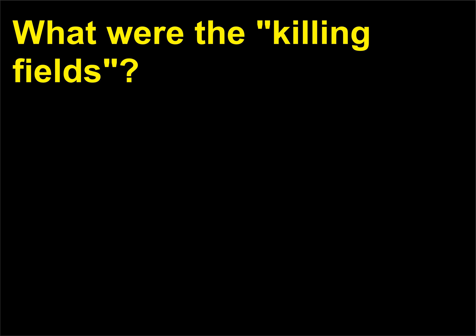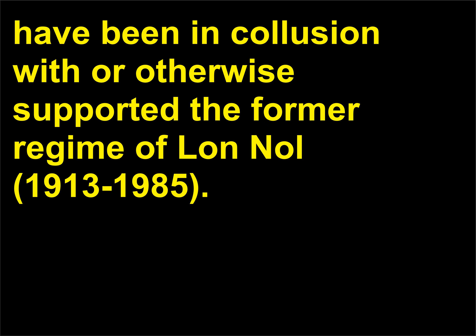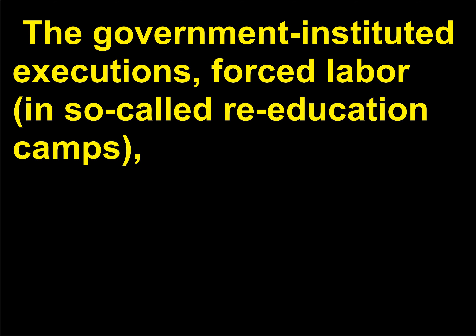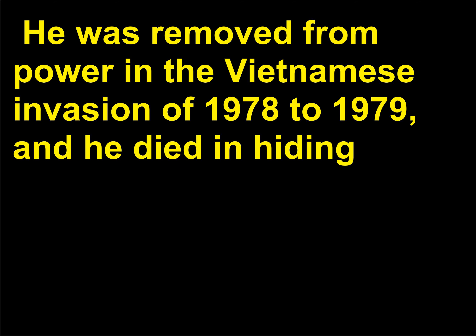What were the killing fields? After Communist leader Pol Pot, 1928–1998, head of the Khmer Rouge, took over the Cambodian government in 1975, he ordered a collectivization drive, rounding up anyone believed to have been in collusion with or otherwise supported the former regime of Lon Nol, 1913–1985. The government instituted executions, forced labor in so-called re-education camps, and famine, combining to kill one in every five Cambodians — an estimated two million people — during Pol Pot's reign. He was removed from power in the Vietnamese invasion of 1978–79, and he died in hiding.